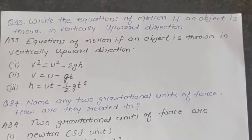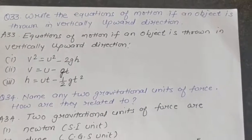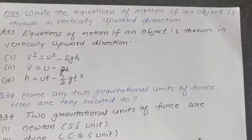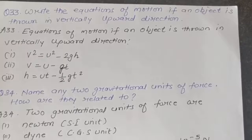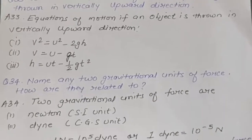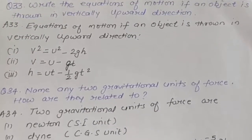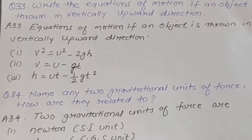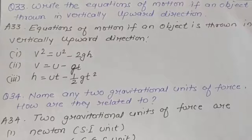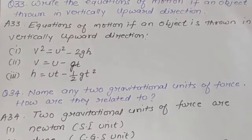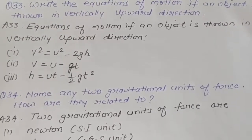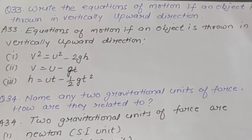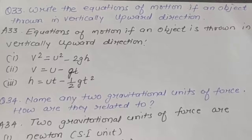Question 33: Write the equations of motion if an object is thrown in the vertically upward direction. Answer: The equations of motion are: v² = u² − 2gh, v = u − gt, and h = ut − ½gt². The minus sign in these three equations appears because the object is moving in the upward direction, against gravity.